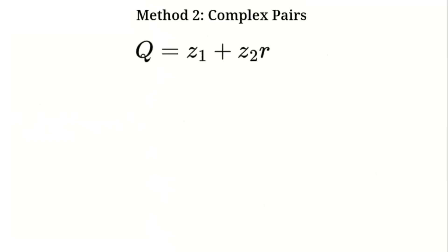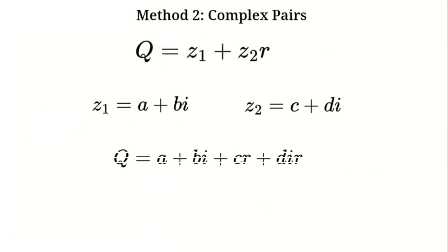Instead of jumping straight into three-dimensional space, we're going to build something even more powerful — quaternions — using just pairs of complex numbers. Let's define a new kind of number. We'll call it q, and it's made of two complex numbers: z1 plus z2 times r, where z1 is a plus b times i, and z2 is c plus d times i. So q becomes a plus b times i plus c plus d times i, all multiplied by r.